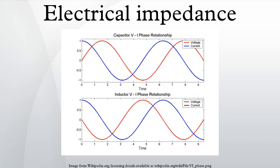Inductor: for the inductor, we have the relation v = L di/dt. Considering the current signal to be I e^jωt, it follows that the ratio of AC voltage amplitude to AC current amplitude across an inductor is ωL, and that the AC voltage leads the AC current across an inductor by 90 degrees. This result is commonly expressed in polar form as Z_L = jωL, or, using Euler's formula, as Z_L = ωL∠90°.